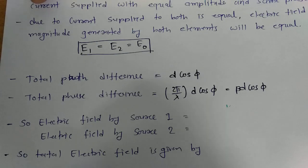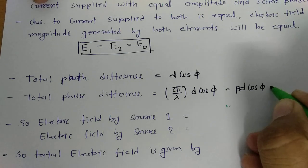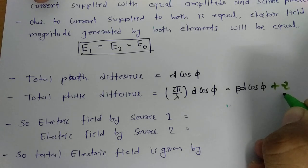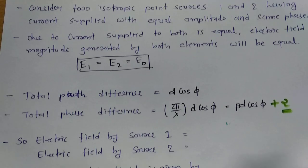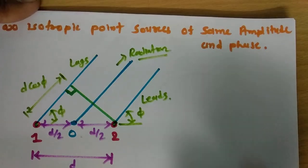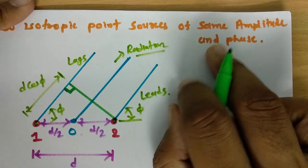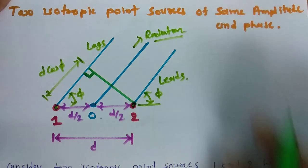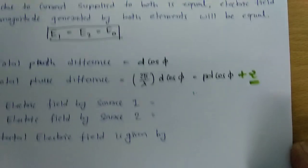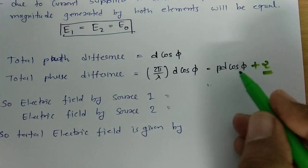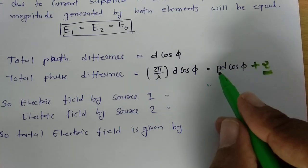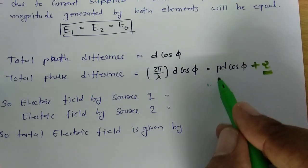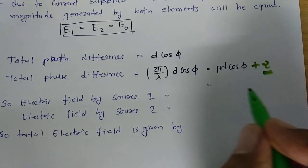For a generalized calculation, we add α, where α is the initial phase difference. Since we are considering equal amplitude and phase, but for the general case, the total phase difference is ψ = β·d·cos(φ) + α.